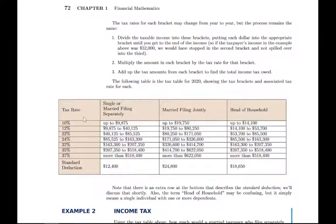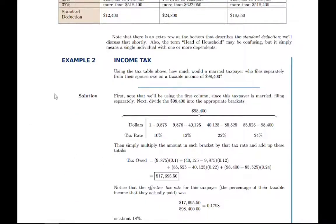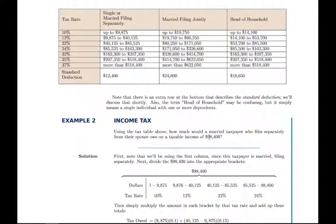Head of household is a slightly different category — it's basically a single individual with dependents. Single is more like just one person filing taxes for themselves with no dependents. In the given problem, you'll have a different category perhaps, so make sure you pick the right column for whatever category the person falls into. Here's another example using this full table: a person with a taxable income of $98,400 who is married filing separately. You use that first column and go through the same calculation as before, just with different numbers.